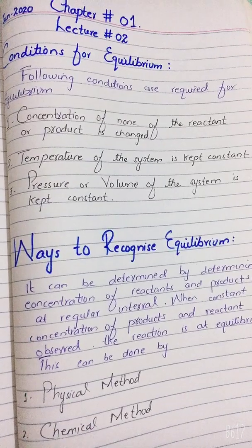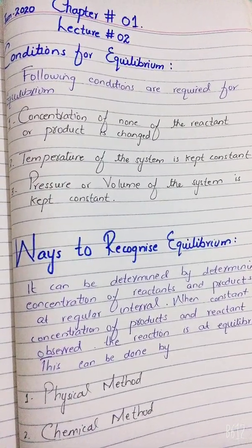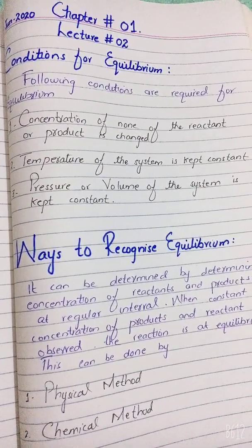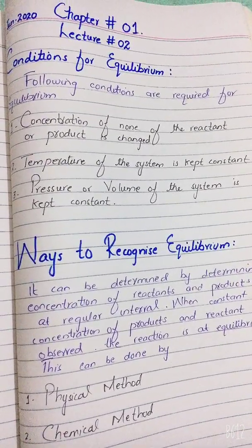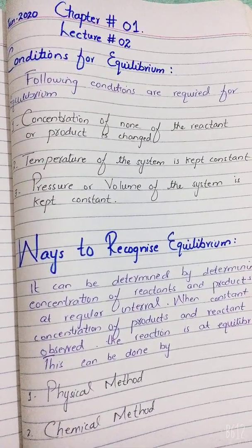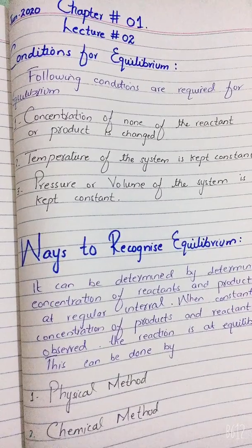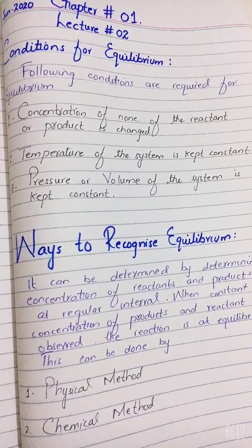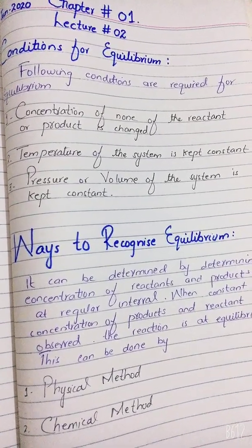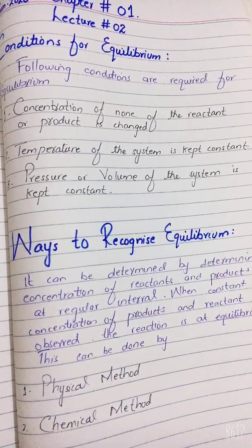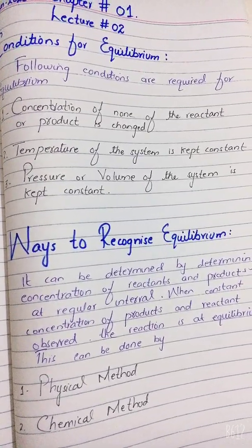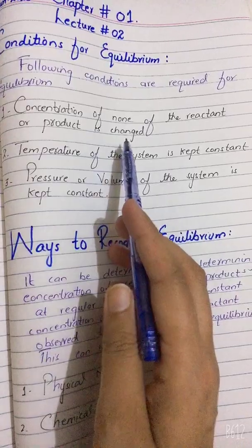The quantity that you take initially at the start of the reaction must be the same at the end of the reaction. None of the concentrations will be changed — neither of the reactants nor of the products. So the first condition is that the concentration of none of the reactants or products is changed.